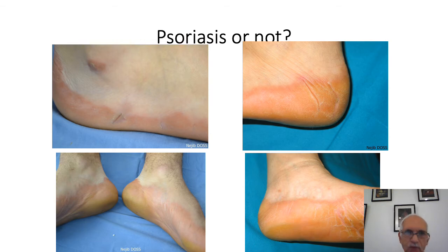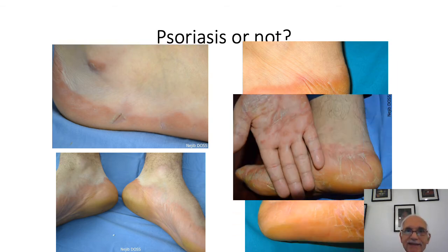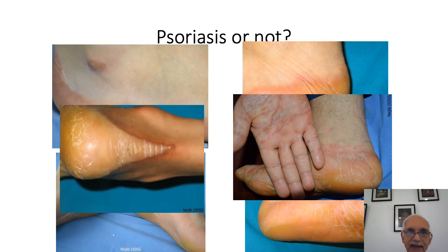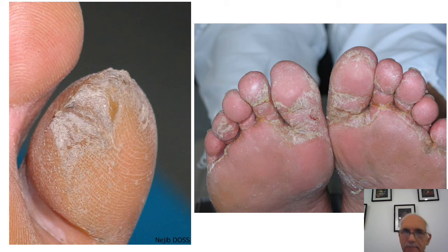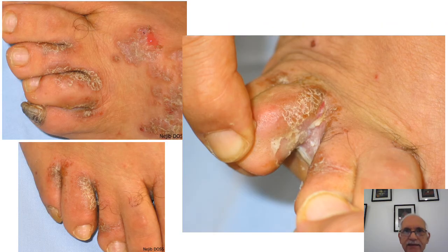Here we have a plantar keratoderma with yellow and thicker skin of the soles — it was psoriasis and palmoplantar keratoderma (Meleda type). These lesions are often misdiagnosed as tinea pedis, but in fact it was psoriasis.